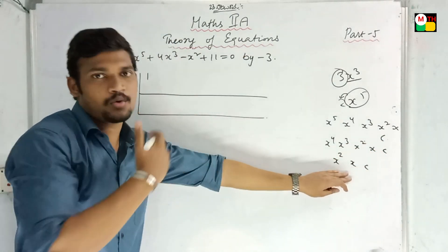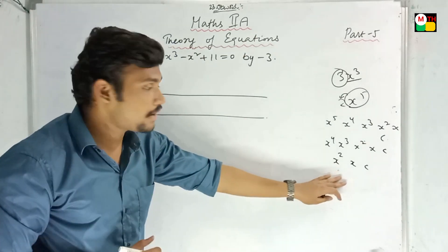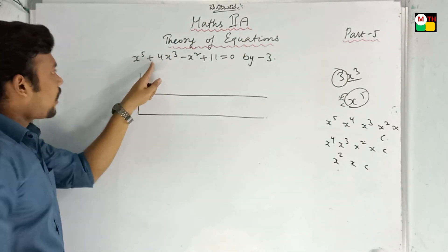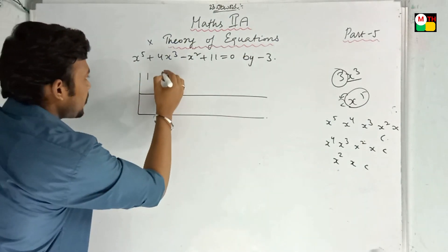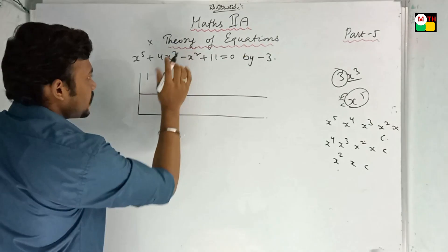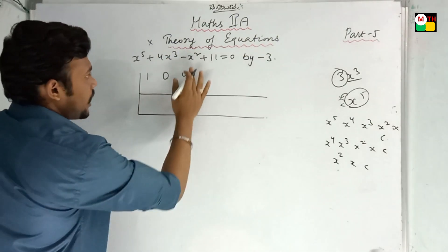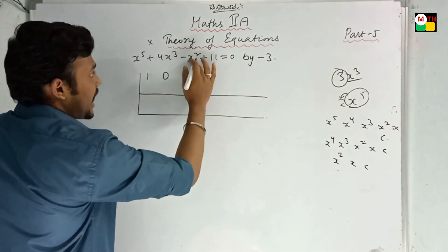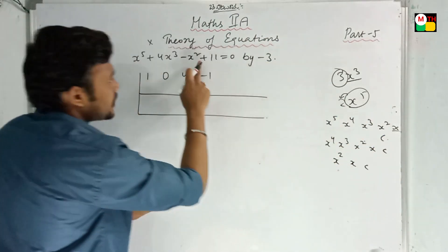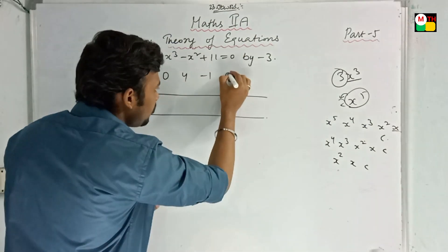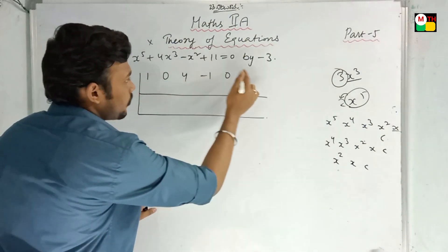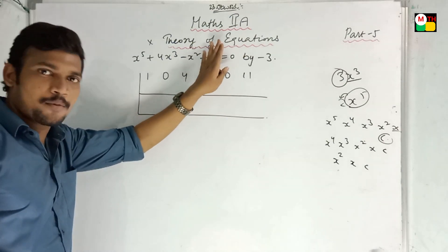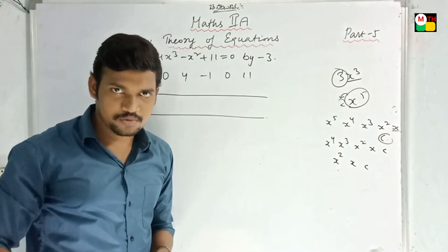So this is the line in sequence — the powers in sequence. Let me tell you: x power 5, then x power 4. In place of a missing term you have to put 0. Remember that. Then x power 3. Next, x square. If a term is missing, you have to put 0 again — you have to put 0.